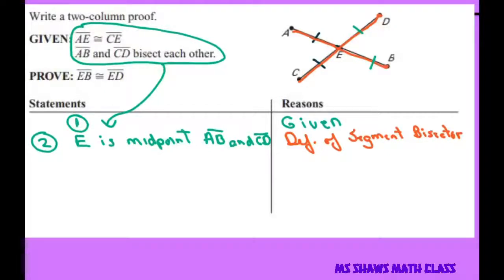Okay, so three we're going to say that line segment EB is congruent to AE, and also CE line segment is congruent to ED. And that's definition of midpoint.